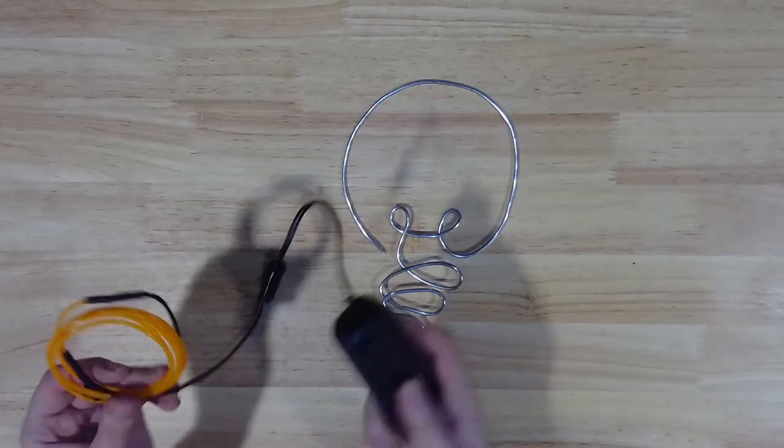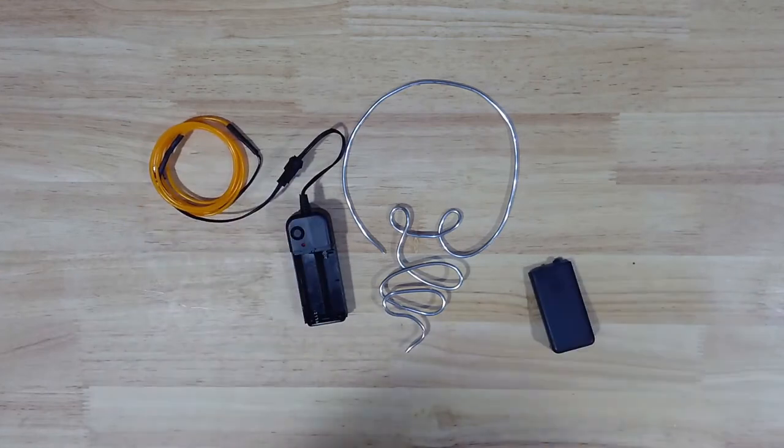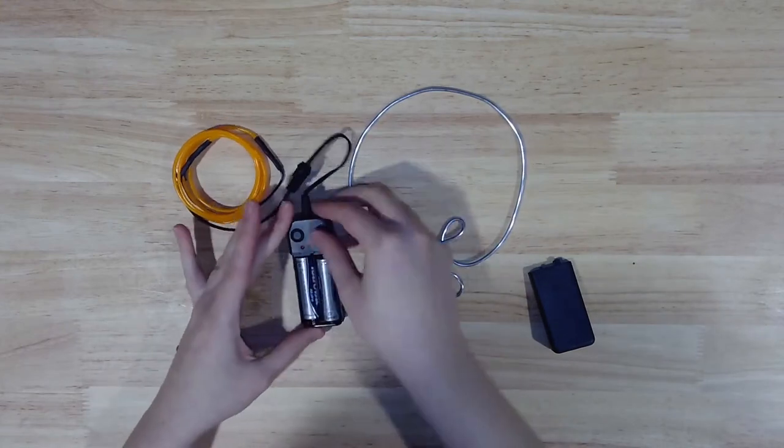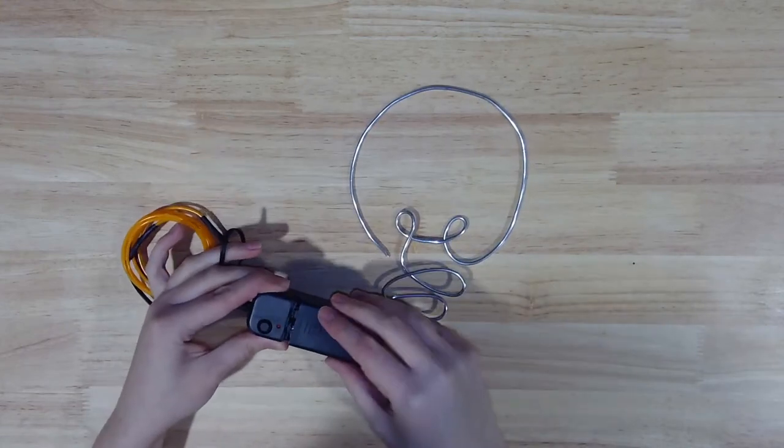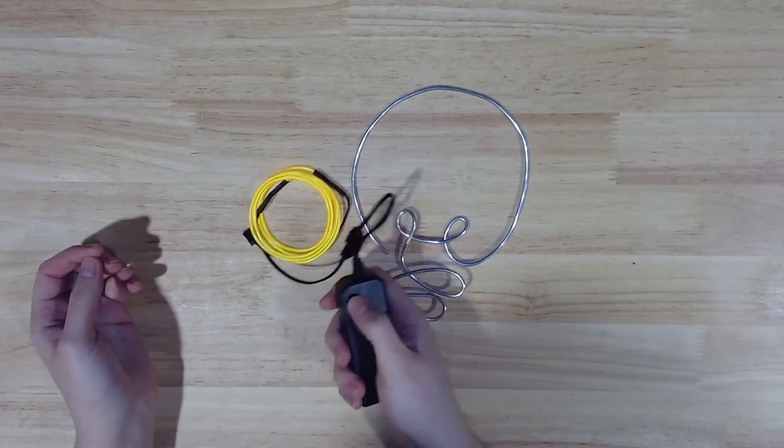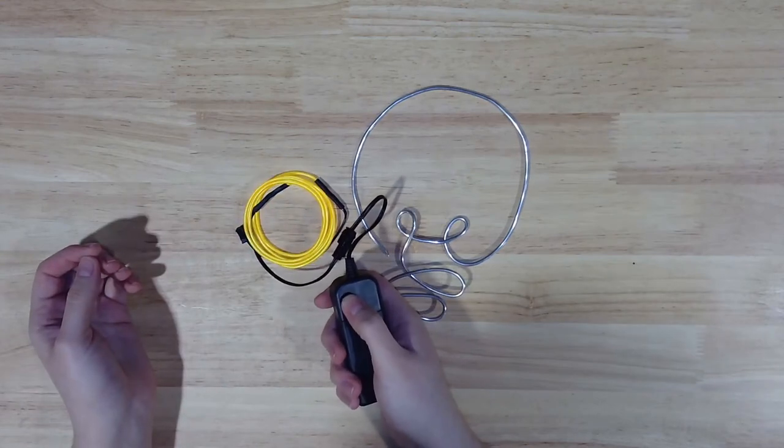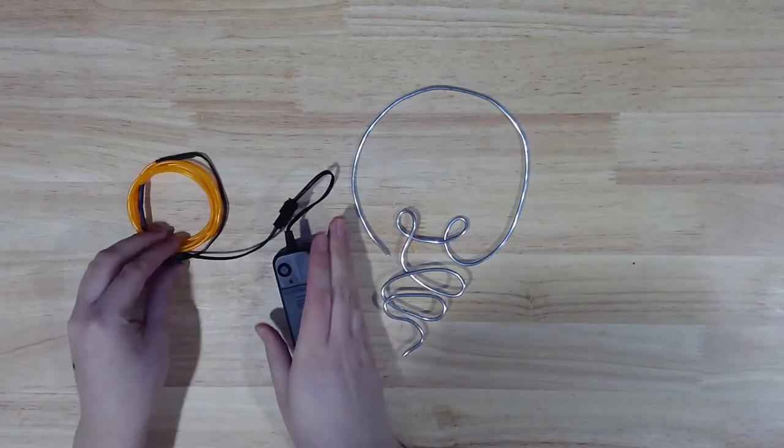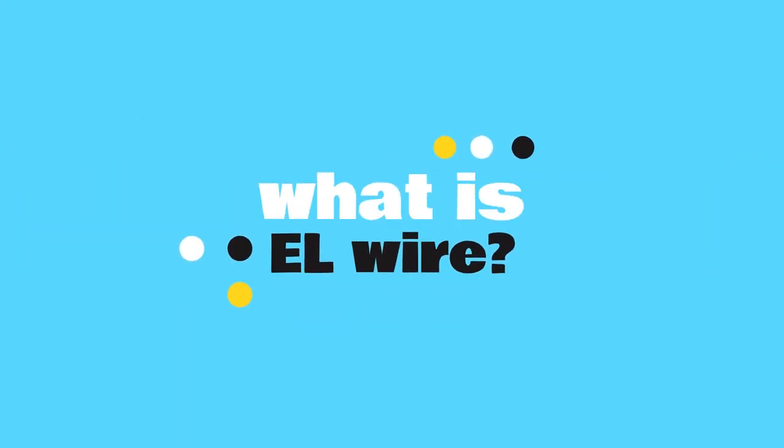Now it's time to make your sign glow. If you'd like to see what your wire looks like lit up, you can put your batteries in the pack now for a preview. Your battery pack has three on settings, which you can cycle through by pressing the big round button on the top. Solid, slow blinking, and rapid blinking. You might notice a high-pitched singing sound when your wire is on. That's completely normal.